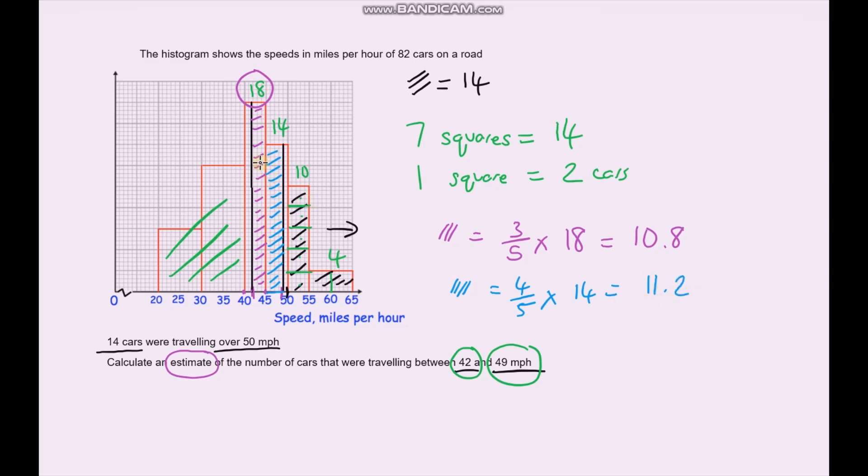So we've worked out the magenta area plus the blue area. So if we add them together, 10.8 plus 11.2. 8 plus 2 is 10, carry the 1. 0 plus 1 is 1, plus 1 is 2, and 1 plus 1 is 2. So it's 22. It's worked out quite nicely because it's a whole number. So 22 cars. And again, I'm going to do an approximate sign. That's approximately 22 cars. We don't know for sure, but that is our best estimate.